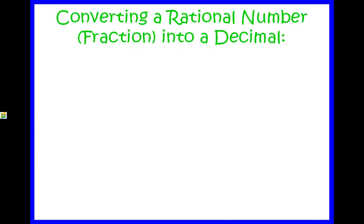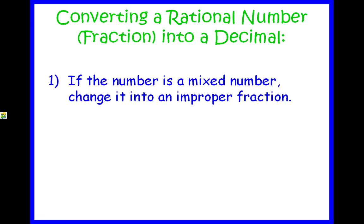We're going to talk about converting rational numbers, fractions, into a decimal. If the number happens to be mixed, you're going to change it into an improper fraction first. After that, you're going to divide. If it's not a mixed number, you just skip the first step and just divide.